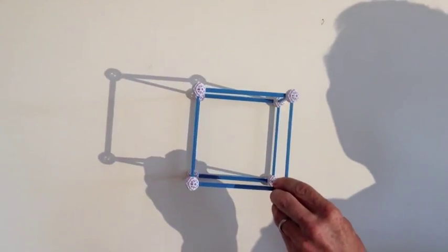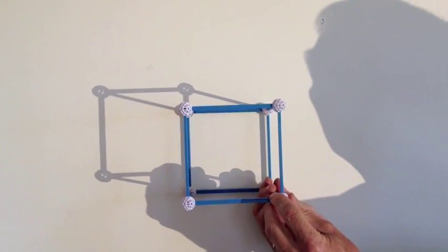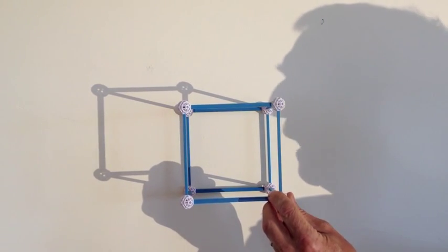The cube, which lives in three dimensions, has two cubed corners, or twice as many again. Eight.